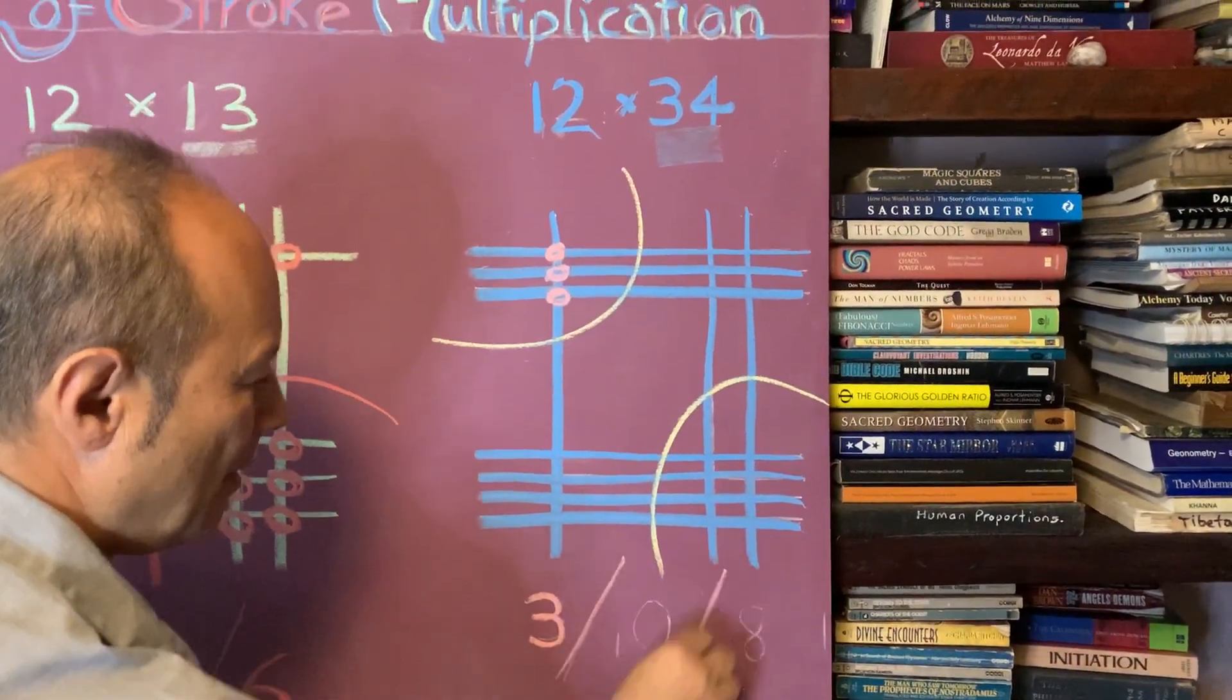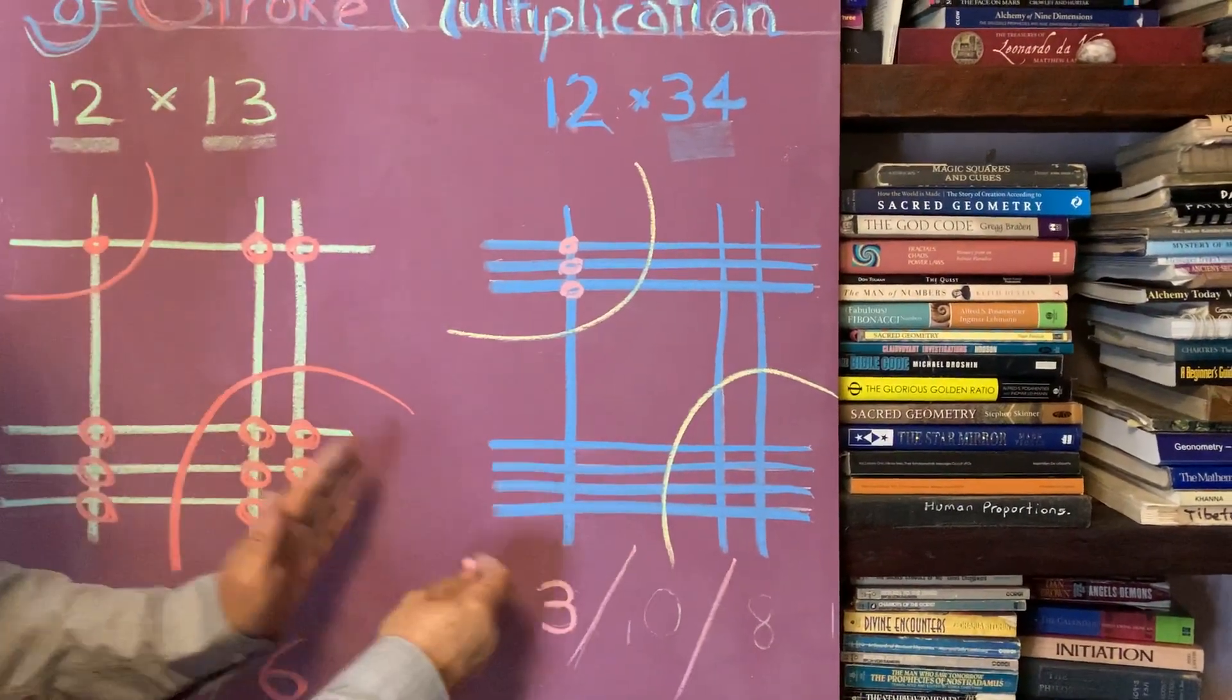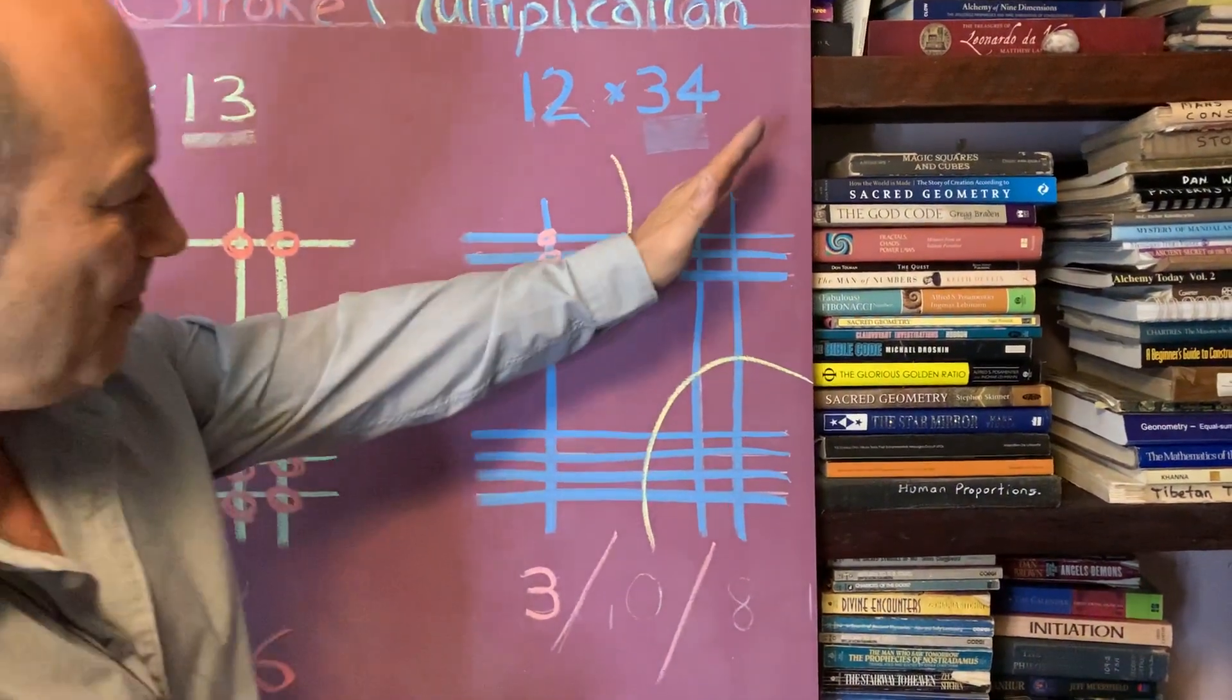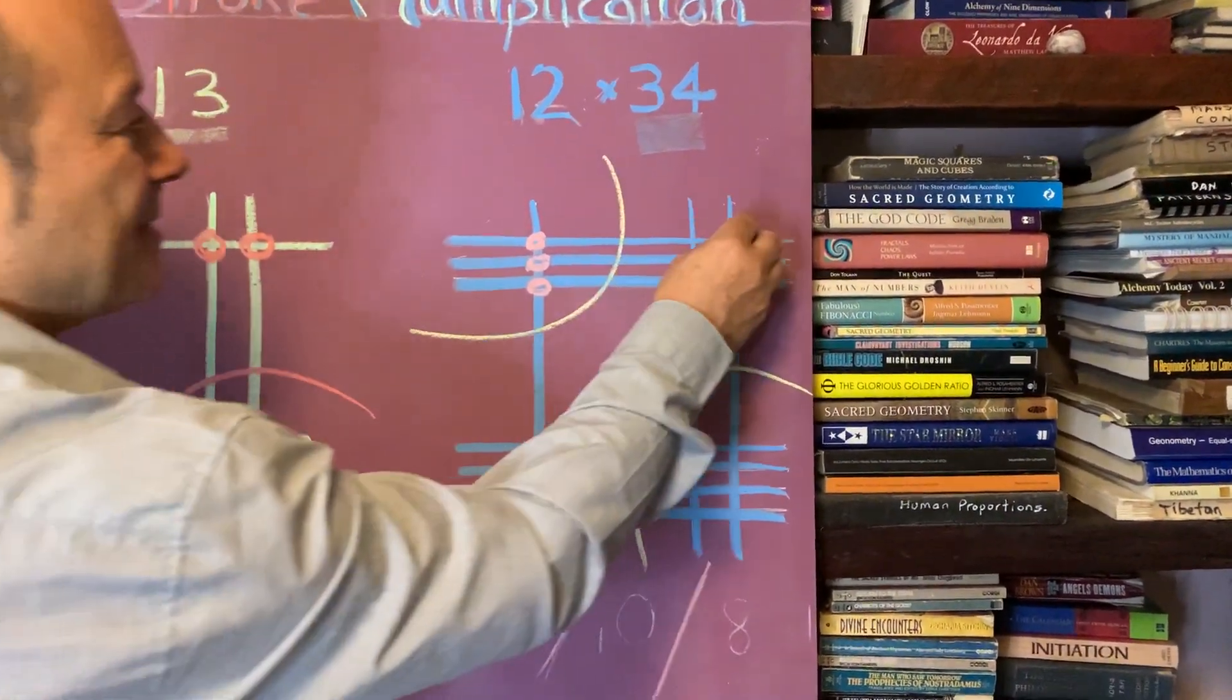I'm going to put in what we call forward slash, because that separates the hundreds from the tens, from the units. Now in the middle here, we've got a lot of intersections. So I'll just circle them.